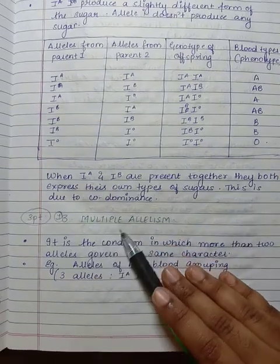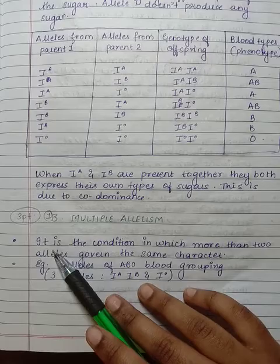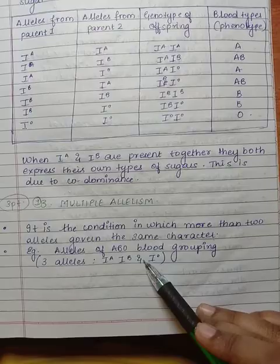Now we come to the topic Multiple Allelism. It is a condition in which more than two alleles govern the same characters. Example: alleles of ABO blood group - three alleles: IA, IB, and I0.